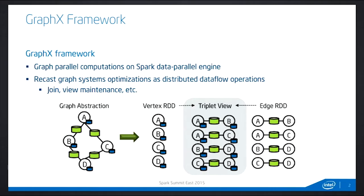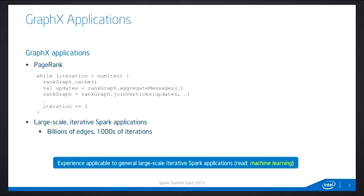You have a graph, you have edges, you have nodes. Under the hood, the nodes are represented as a vertex RDD and you have edge RDDs, and you are creating a triplet view based on those RDDs. Now, this is PageRank — basically that's the canonical graph application for any graph research paper or any example of graph applications.